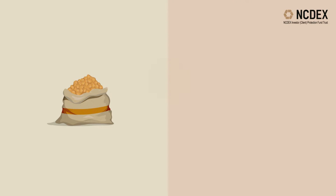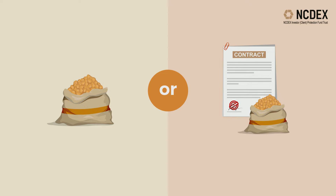Depending on the structure of the options contract, the underlying asset can be either the commodity itself, like Chana or Banglegram for example, or a corresponding futures contract, like a Chana futures contract.